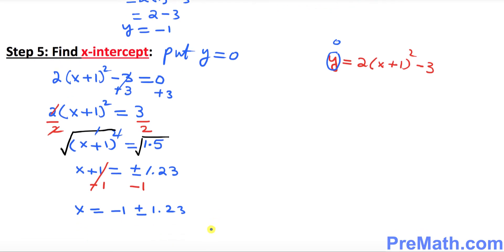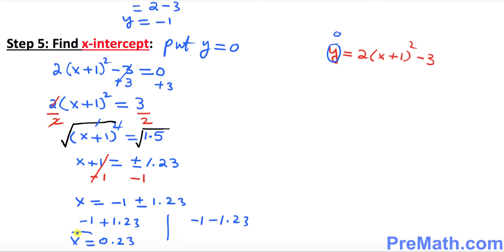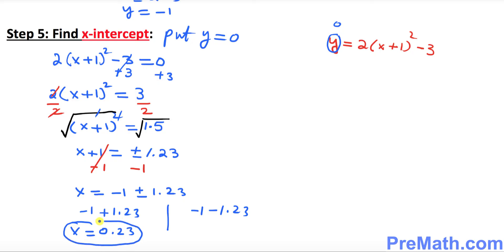We split the two solutions: negative 1 plus 1.23 gives approximately 0.23, which is one x-intercept. And negative 1 minus 1.23 gives approximately negative 2.23, which is the other x-intercept. So we have 2 x-intercepts.